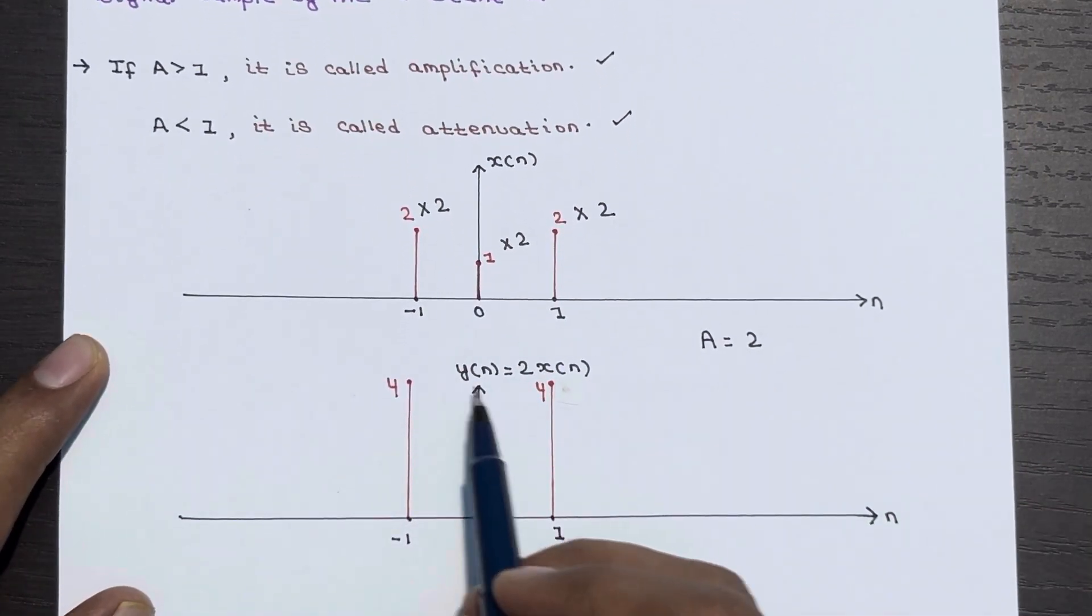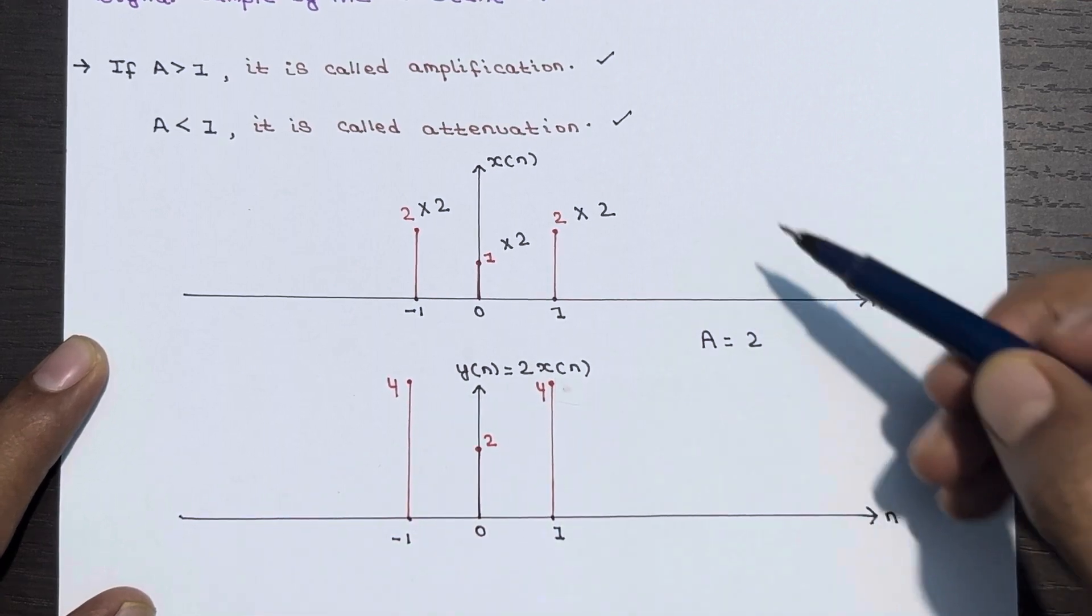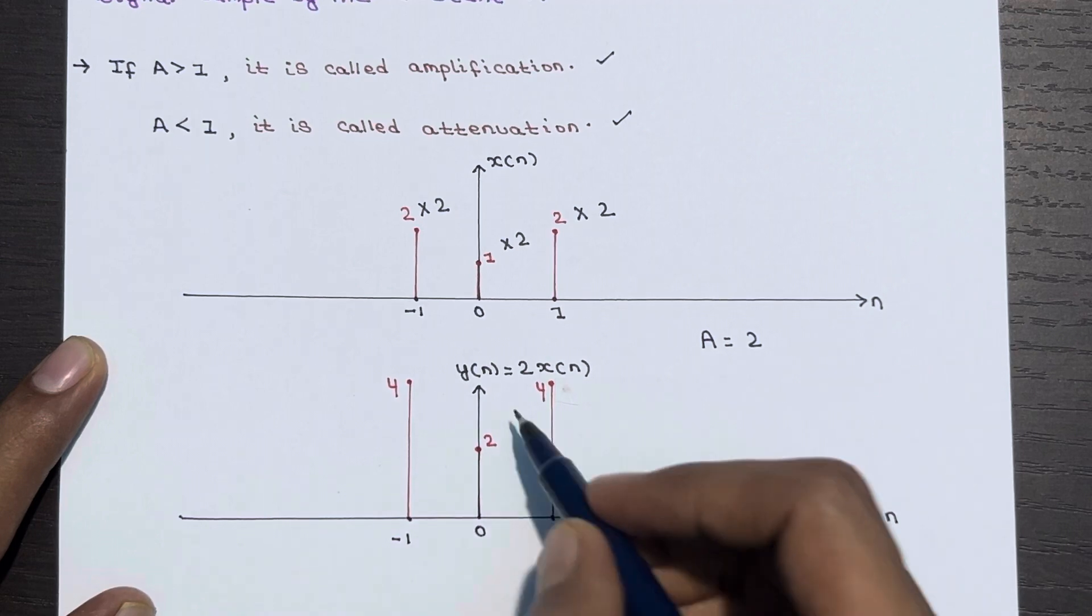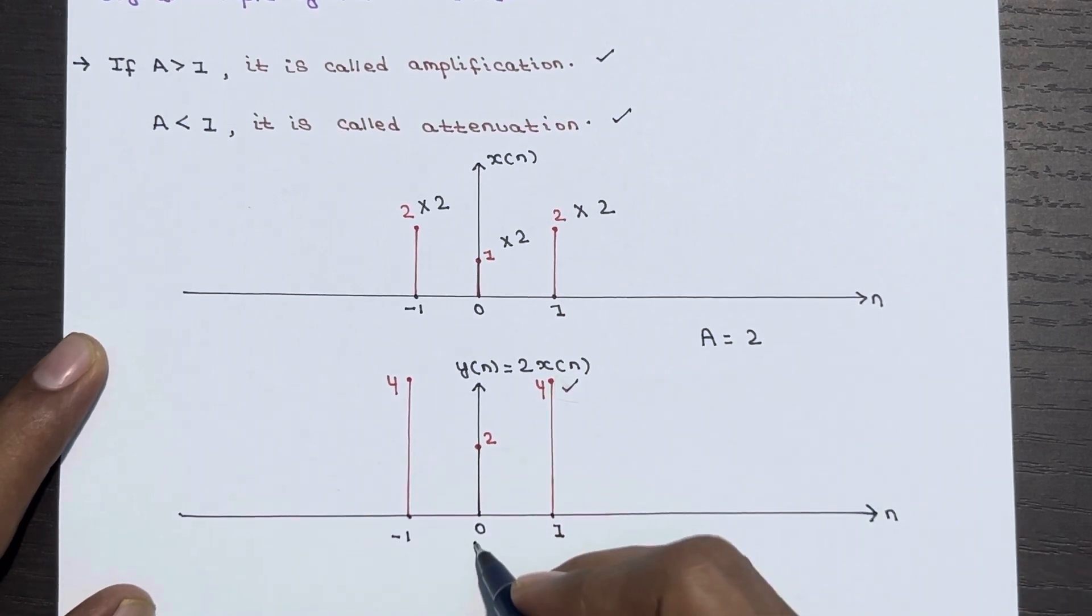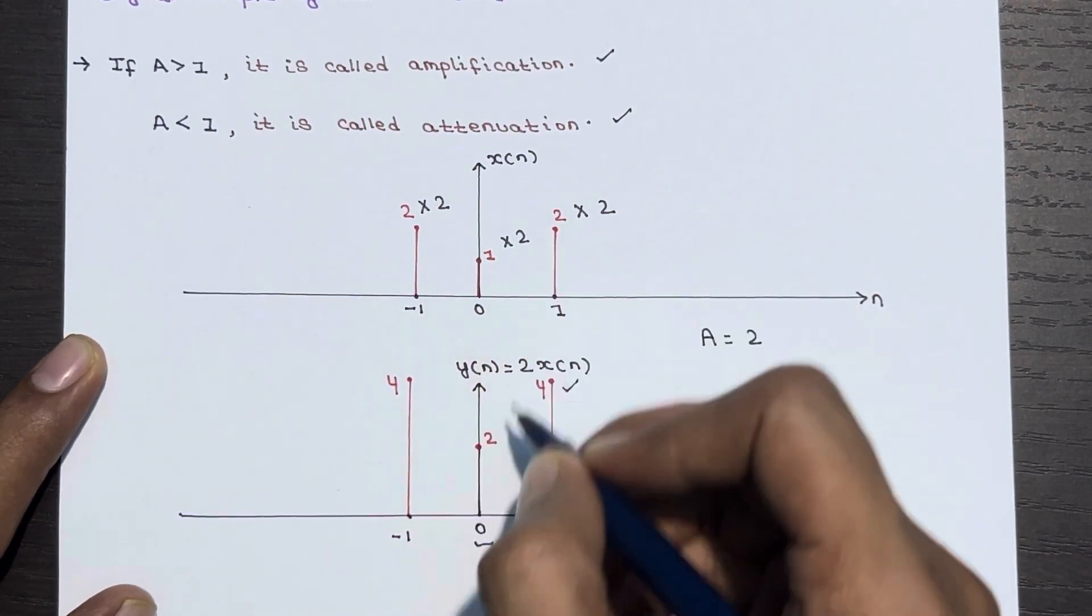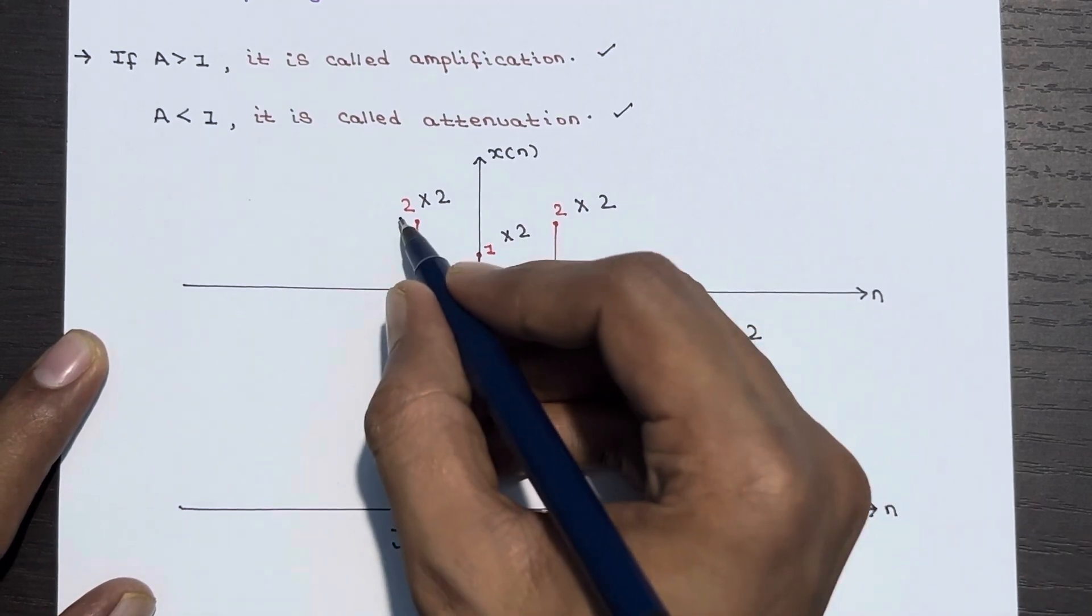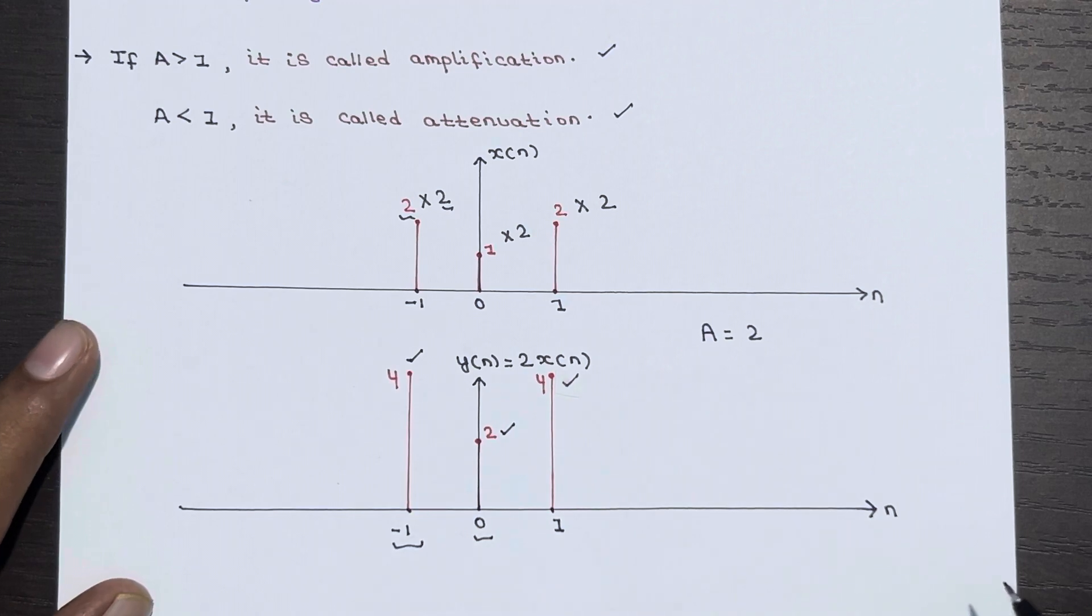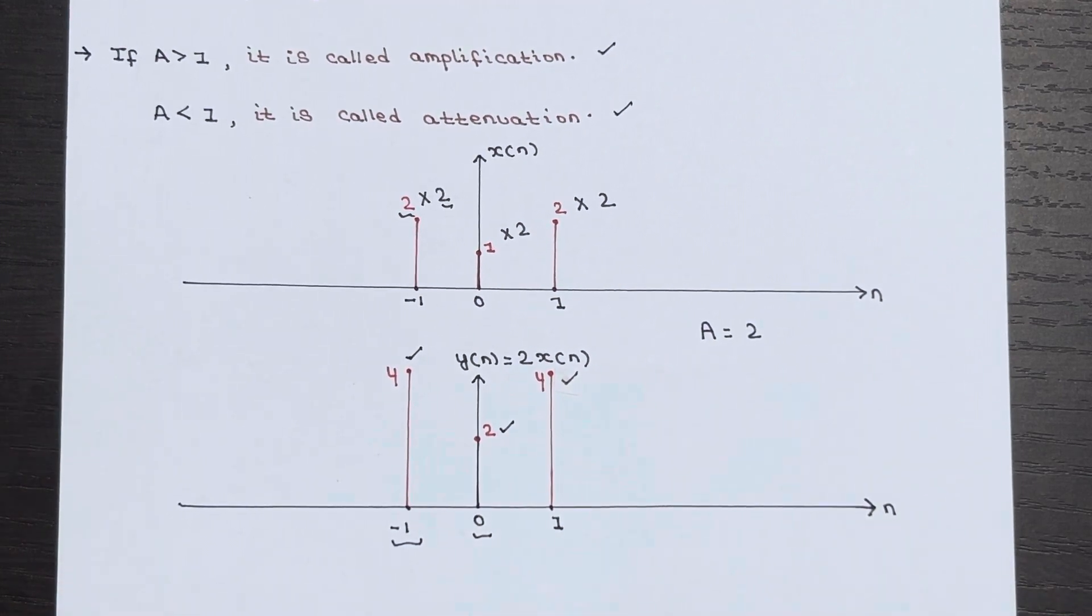This is the graphical representation of y(n) = 2 × x(n). At n = 1, the amplitude becomes 4 (2 × 2). At n = 0, it becomes 2 (1 × 2). At n = -1, it becomes 4 (2 × 2). This is the meaning of amplitude scaling.